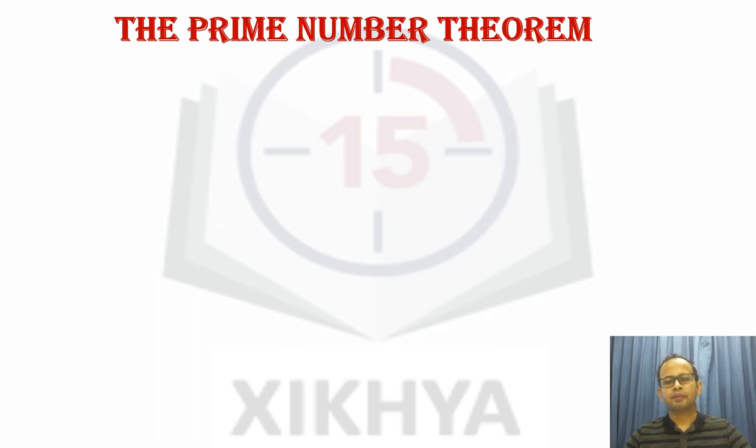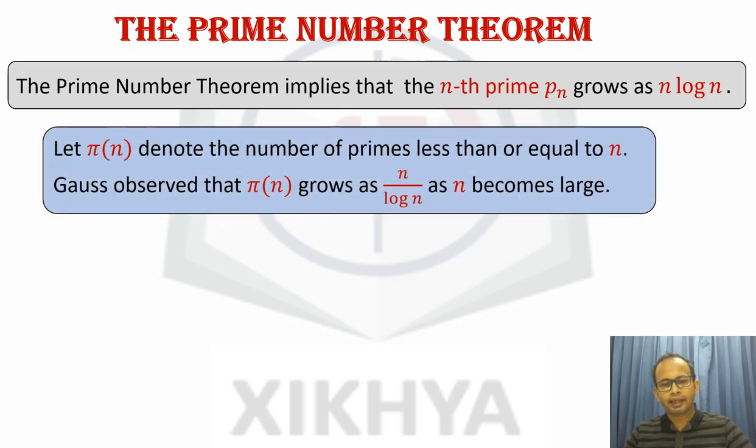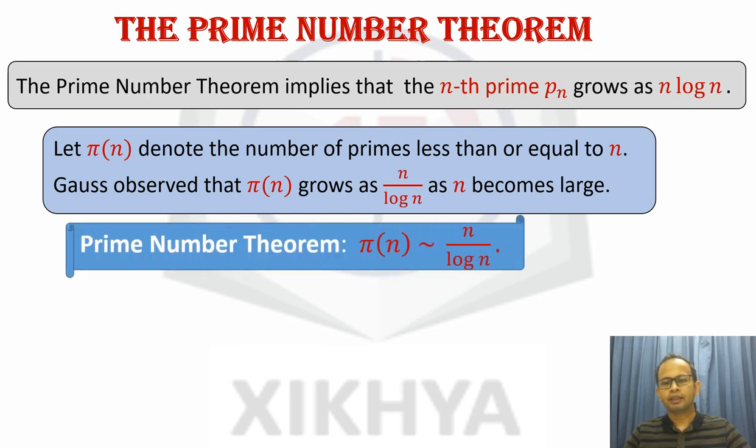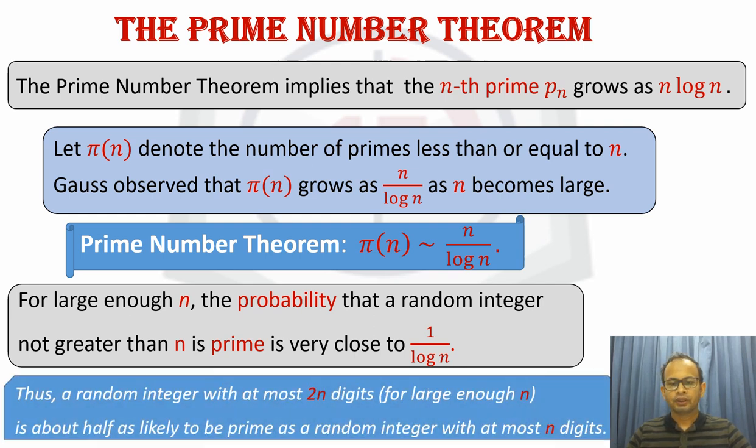And now that requires us to find big primes. And this prime number theorem actually helps us to locate where we should look for the nth prime. It says the nth prime should be closer around n log n. So how do we arrive at that? Let's say π(n) counts the number of primes less than or equal to n. Then Gauss made this observation that π(n) grows like n by log n as n becomes very large. And this prime number theorem precisely states that. And it is proved much later. So it tells us approximately that the probability of a random integer being prime is roughly 1 by log n when n is very large. All these properties, they work out when n is very large. And in other words, suppose if we take a number with 2n digits, then it is half as likely to be prime as a number with at most n digits.